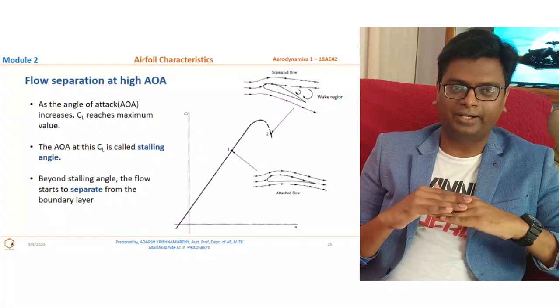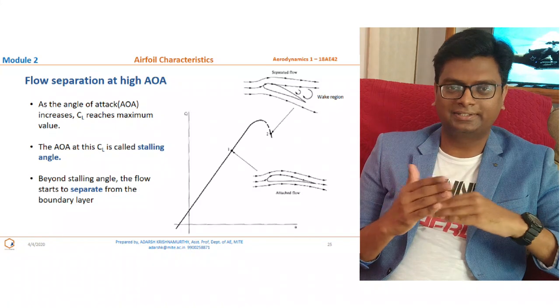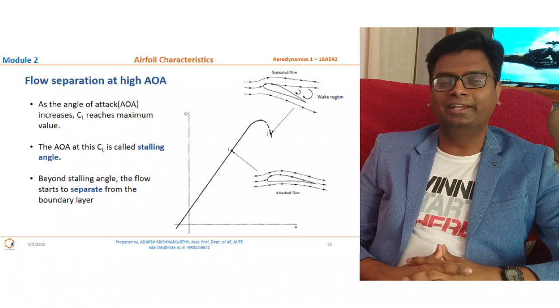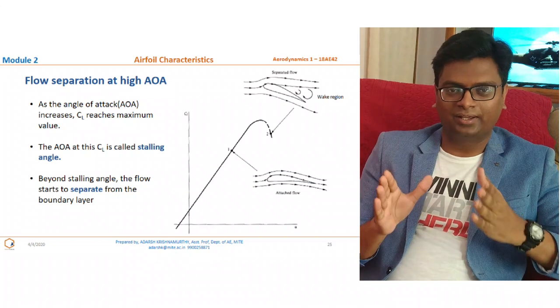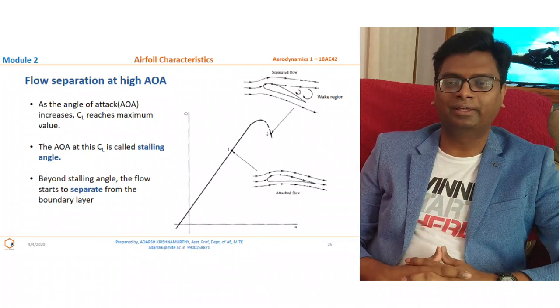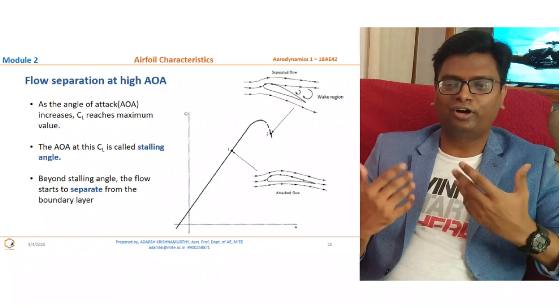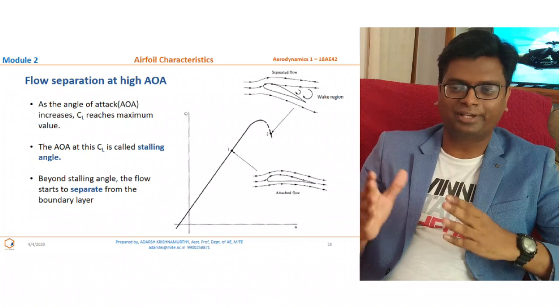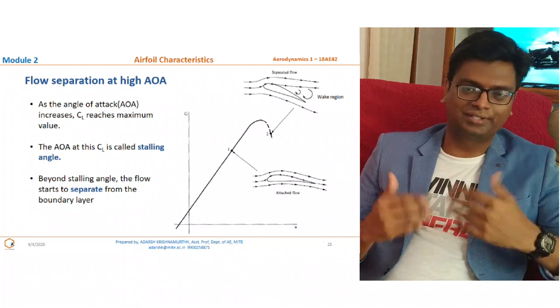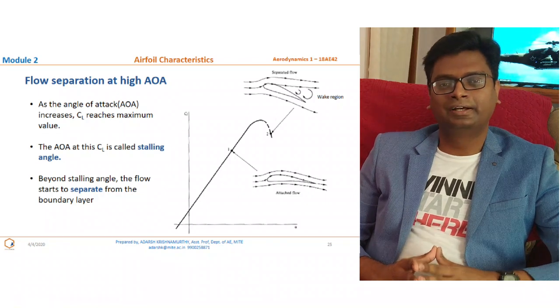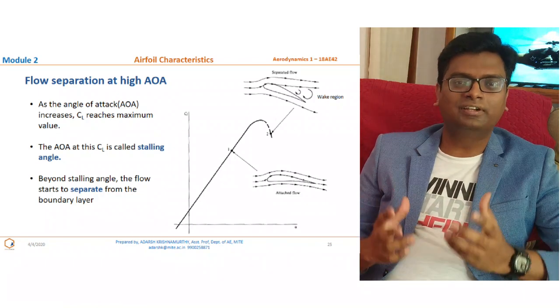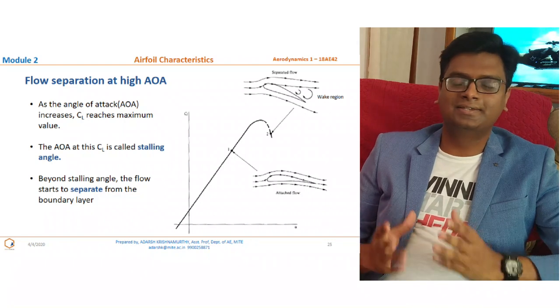We will start with flow separation. What is flow separation and why does it happen? If a flow gets separated from the surface, that is called flow separation. There are various reasons why it happens. Now coming to the airfoil aerodynamics — let us assume the airfoil is kept at zero degree angle of attack. For our analysis we have considered a cambered airfoil. As discussed in an earlier lecture, for a cambered airfoil the coefficient of lift exists even at zero angle of attack.